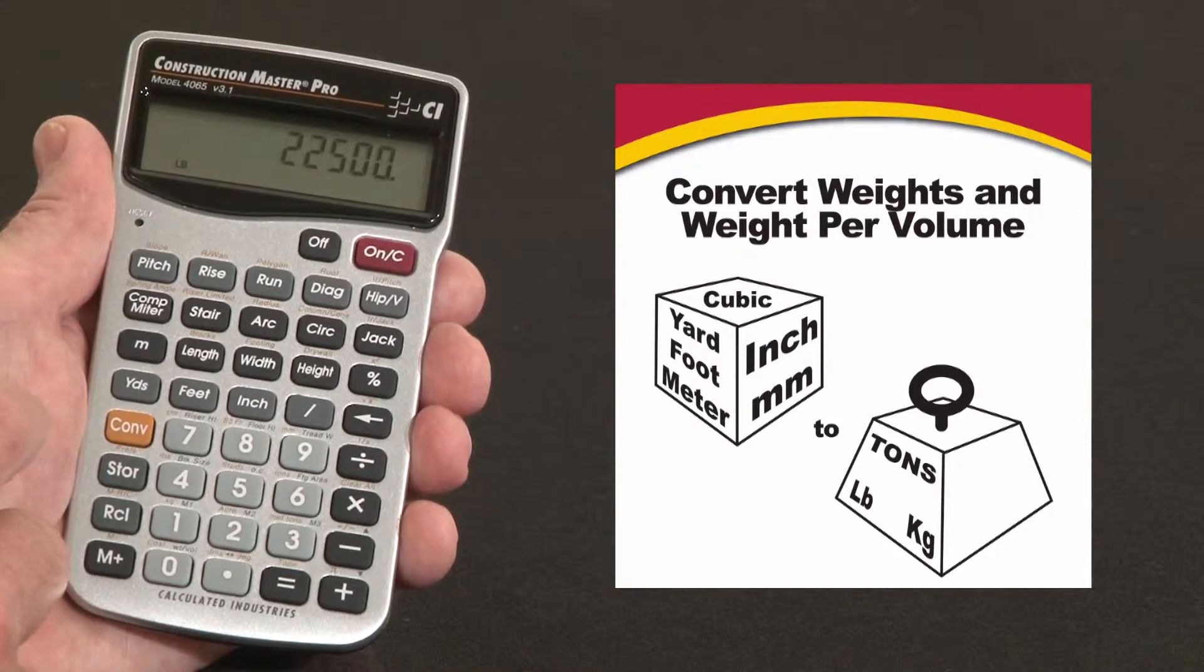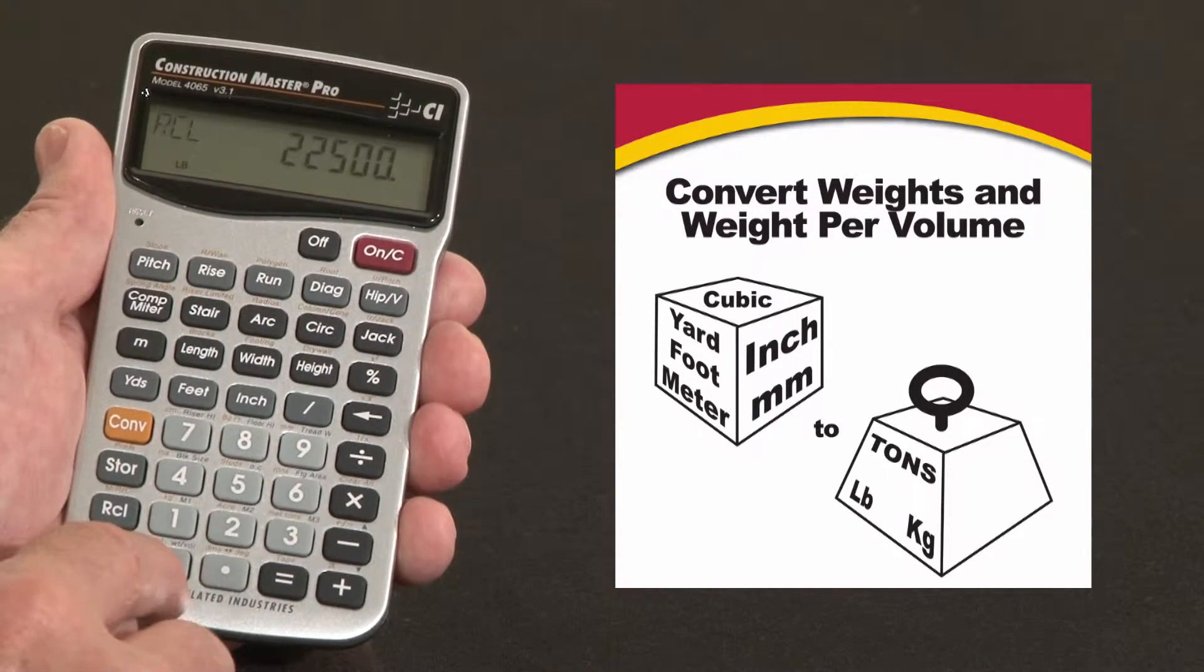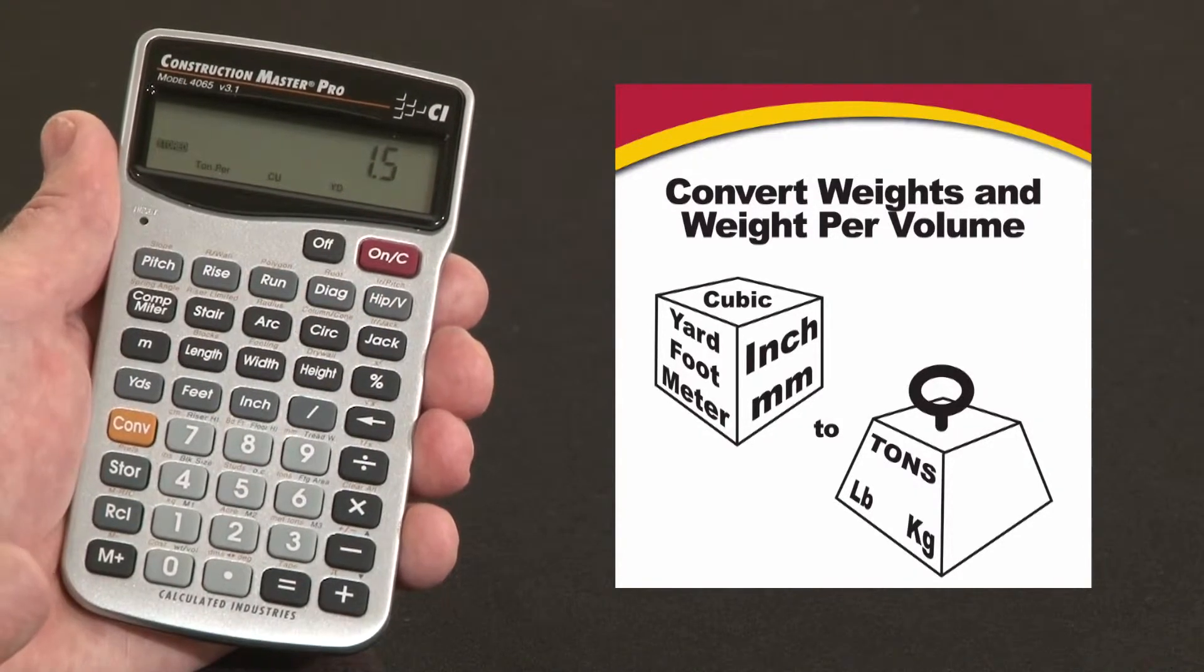That's based on the default weight per volume. You can always see that by hitting recall. Over the zero key it says weight per volume. And our stored default is one point five tons per cubic yard.